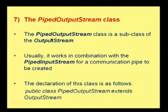Next is our PipedOutputStream. The PipedOutputStream class is a subclass of the OutputStream class. It usually works in combination with PipedInputStream for a communication pipe to be created. The declaration is: public class PipedOutputStream extends OutputStream. PipedInputStream will be communicating with PipedOutputStream, meaning a communication pipe is created through which data from PipedInputStream can be read and data into PipedOutputStream can be written.